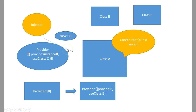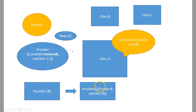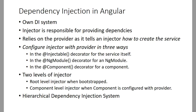The injector creates the instance and provides it to class A. This enables loose coupling — C can be replaced with class D or any other class in the future. For the provider, we mostly use the short format: instead of writing provide instance B and useClass separately, we simply say provide B, which means provide and useClass are both the same. The injector will create an instance of B and give it to class A.